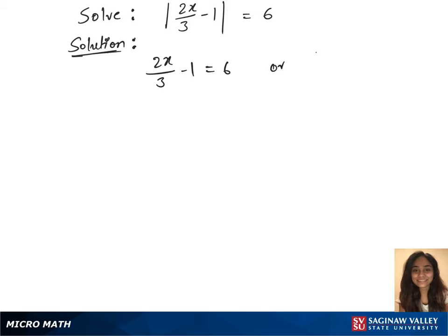We will first solve the first equation by clearing out the fractions by multiplying 3 on both sides. Using the distributive rule, this gives us 2x minus 3 equals 18.